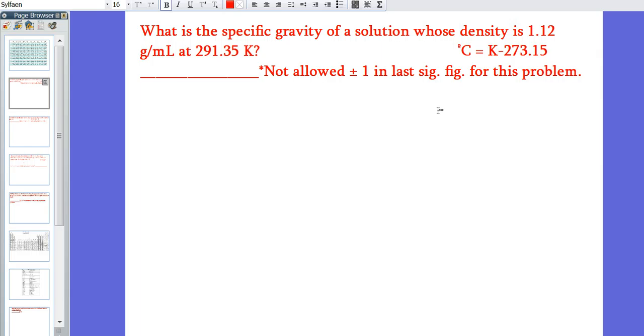So the first question I'm going to work is a specific gravity problem where you have a solution whose density is 1.12 grams per milliliter at 291.35 Kelvin. If you remember, the specific gravity is going to be the density of the substance under these conditions compared to the density of water under those same conditions.